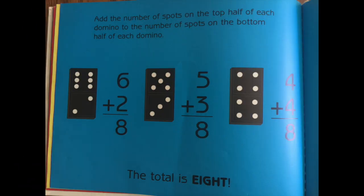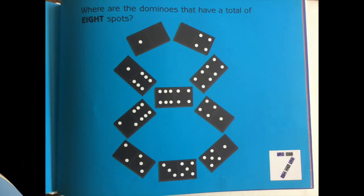Add the number of spots on the top half of each domino to the number of spots on the bottom half of each domino. Six plus two, eight. Five plus three, eight. Four plus four, eight. The total is eight. Where are the dominoes that have a total of eight spots?